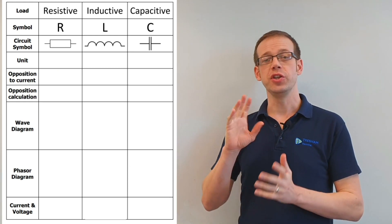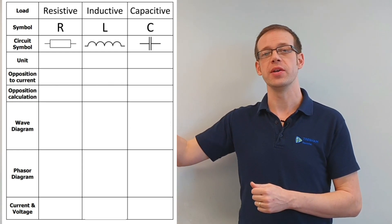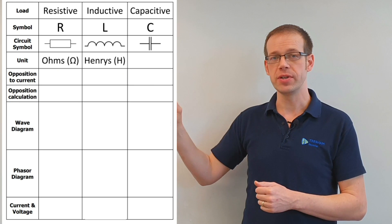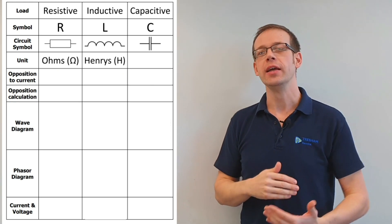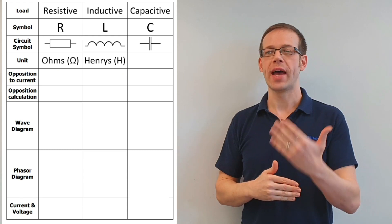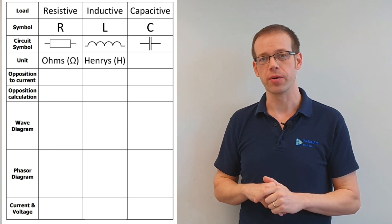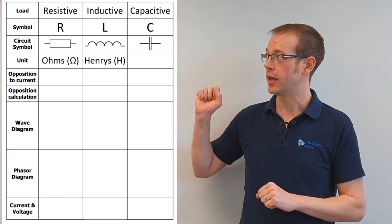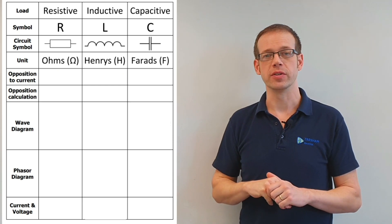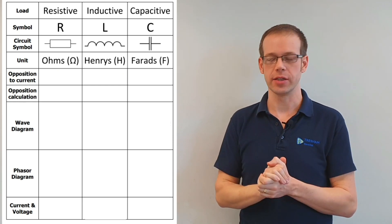We then looked at the units used to measure each of these. Resistance is measured in ohms. Inductive loads are measured in henries — inductance in henries is simply a measure of how good a coil is at generating electricity back in itself or inside another coil. Capacitance is measured in farads, which indicates how much charge a capacitor can store.